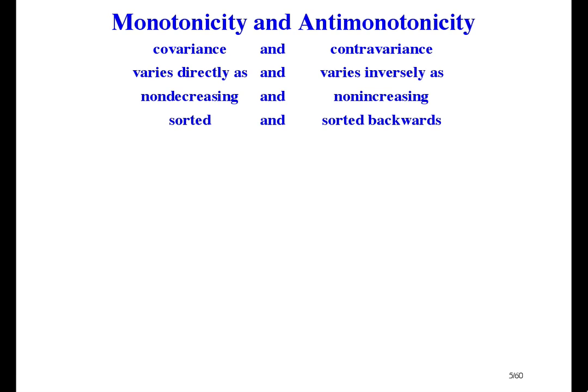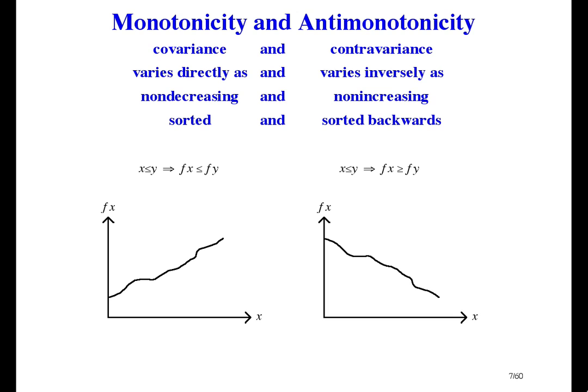If we were talking about numbers instead of binary values, here's what it means. Function f is monotonic means if x is less than or equal to y, then f of x is less than or equal to f of y. And anti-monotonic means turn one of the less than or equal to signs around. Here's the picture. Monotonic means increasing or staying the same but never decreasing. Anti-monotonic means decreasing or staying the same but never increasing.